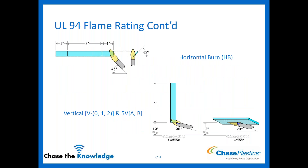What does that look like as an actual picture? For your horizontal burn, the specimen is laid horizontally and then we light the end. Your vertical burns are just that — stood upright, vertical, and lit at the bottom. Your plaque on the right-hand side is what you use for the 5VA and 5VB burn tests. That's what it looks like visually if you're trying to picture how the testing is done.